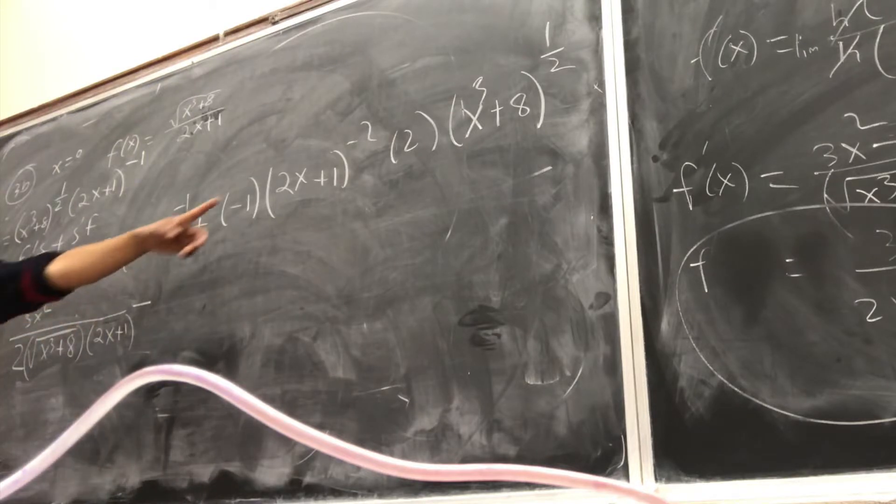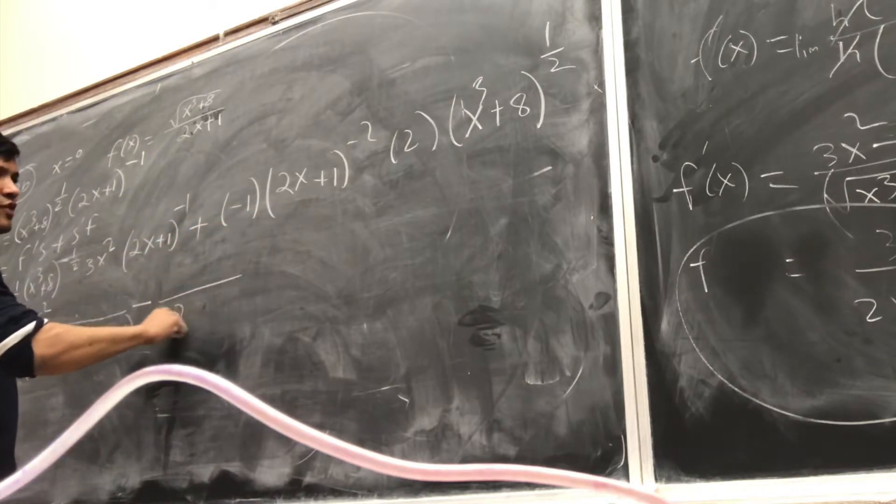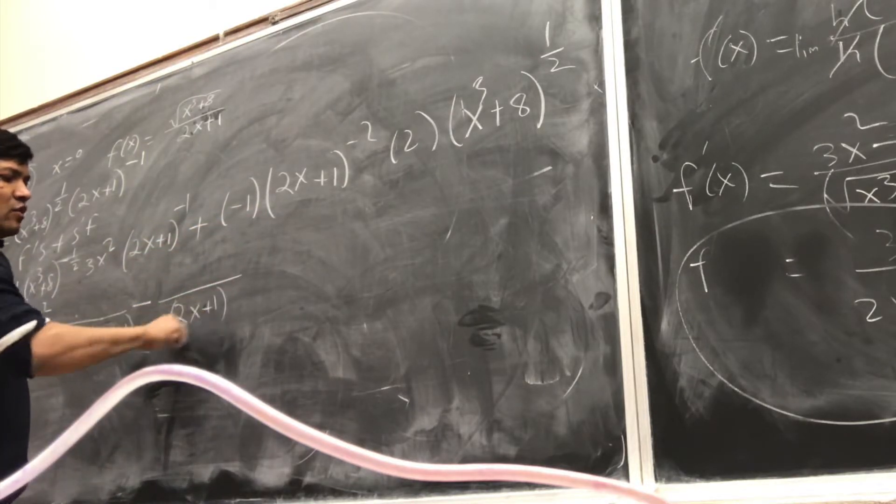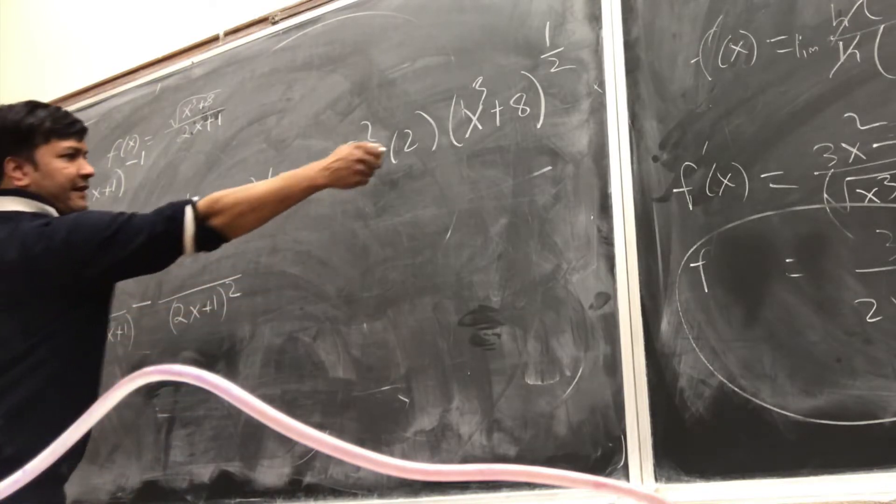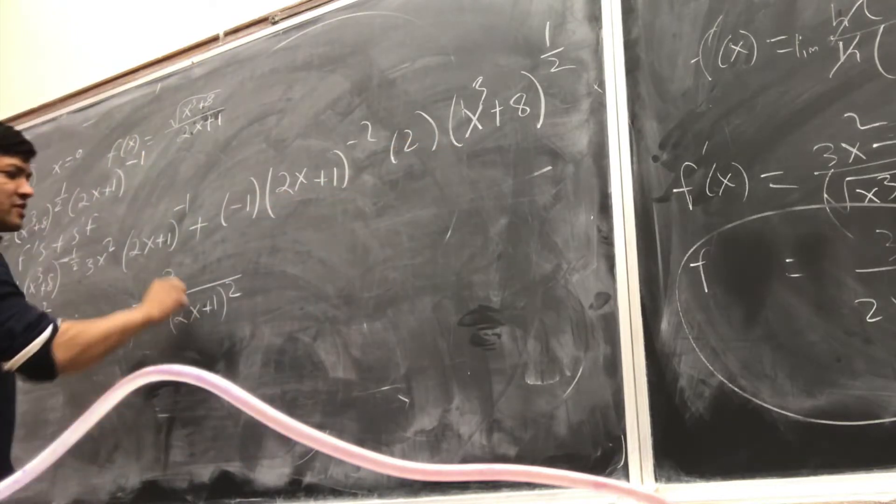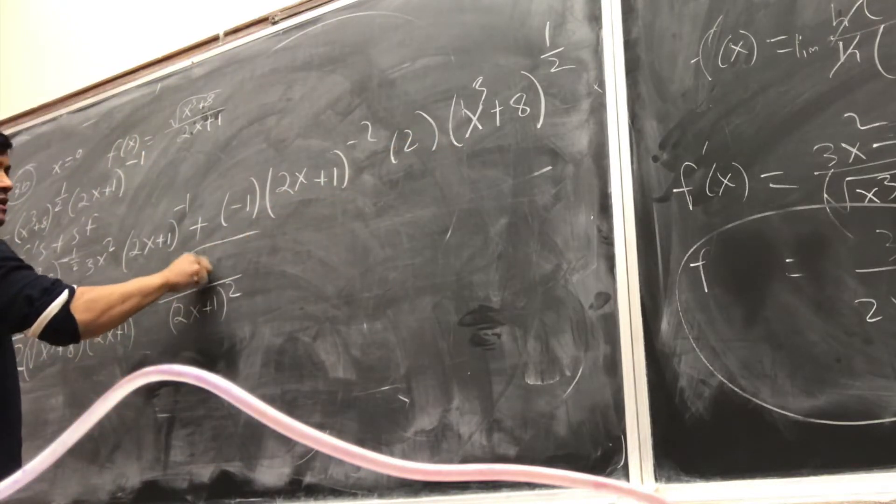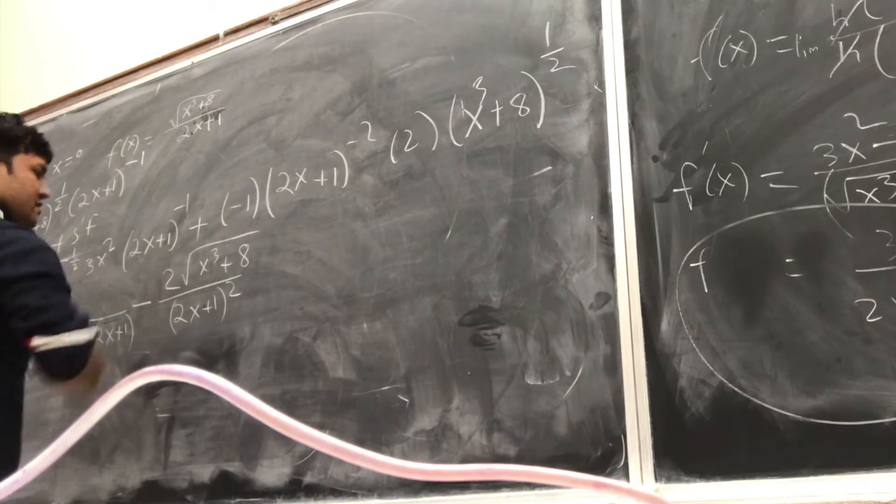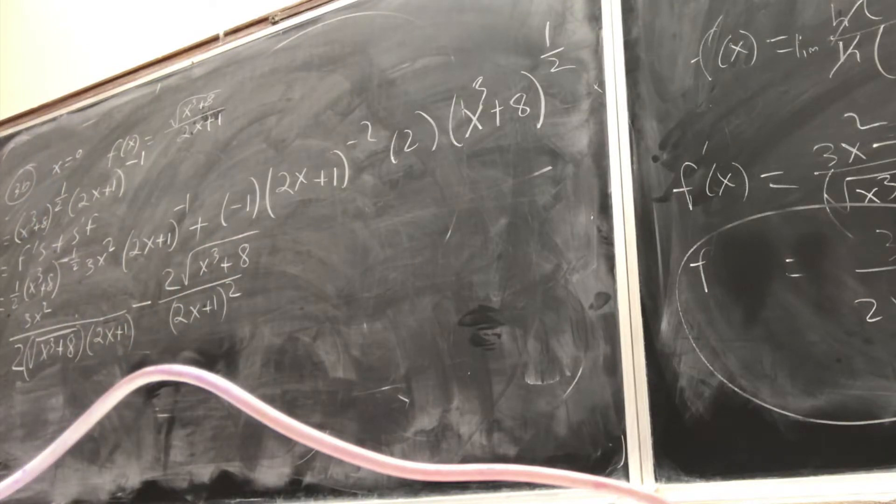This guy is on the bottom, so I'm going to write 2x plus 1 only squared. I'm probably going to write this one on the top and this one also on the top, x cubed plus 8. So hopefully I put everything correctly.